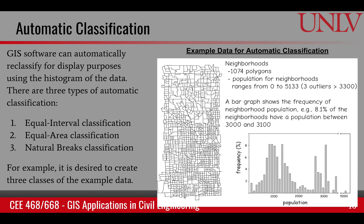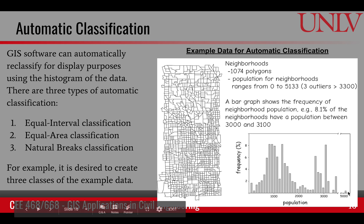There is also automatic classification that you have experienced in GIS — it's a function that GIS provides. When you assign colors to your features based upon an attribute value, you tell it how many classes you want to assign, and it automatically assigns colors based upon some rules. Those rules are based upon the histogram of the values.